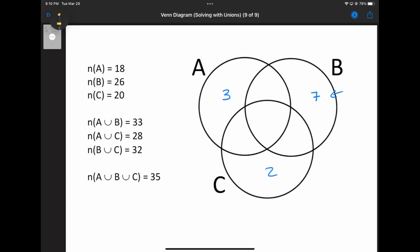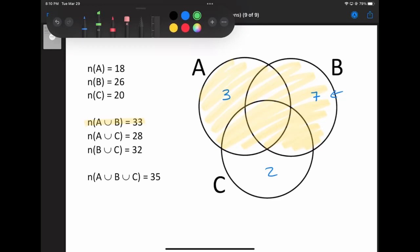If we take a look at the things, for instance, A union B is 33. Well, A union B is that area. And then what I can do is look at one of the singles, and I'm going to choose to look at A.